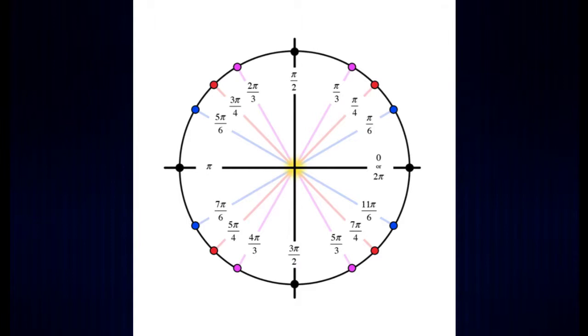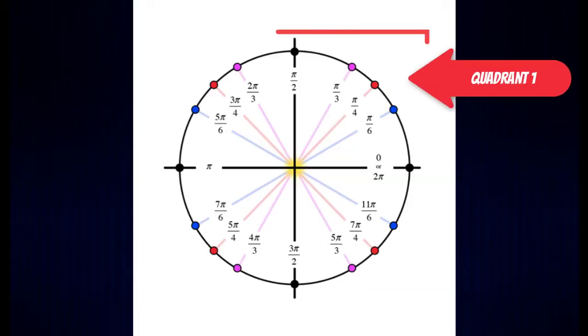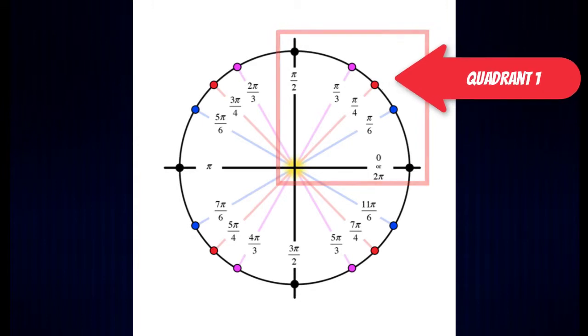So this is our goal: we want to memorize all of the angles in radians around the unit circle. At first glance this can look overwhelming, so we're going to break down this task by looking at quadrant one and then building from there.